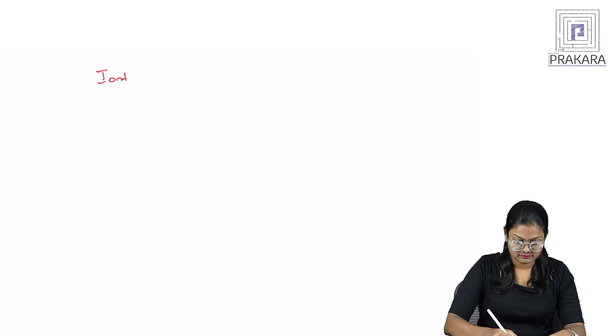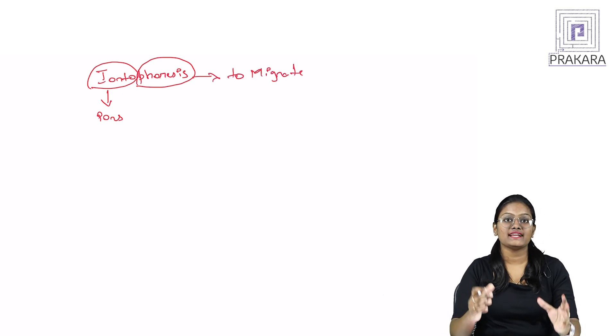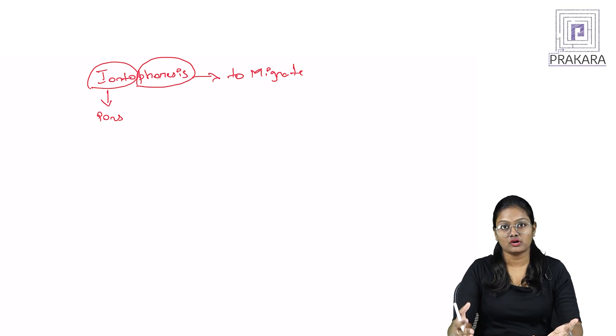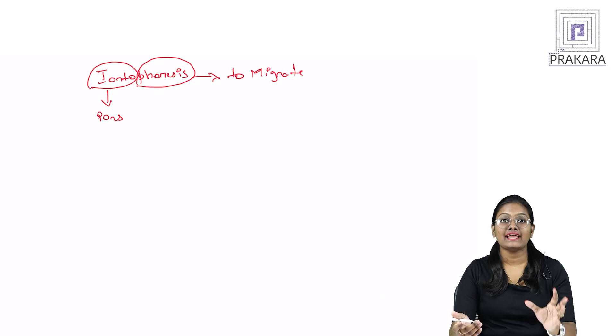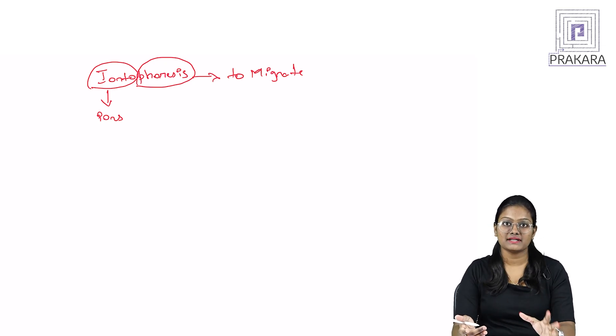This is Amrita and the topic we'll be talking about is iontophoresis. In the previous session we discussed phonophoresis. Iontophoresis and phonophoresis are similar procedures, but the way we implement them and the modes used for transfer of ions into the body are completely different. 'Ionto' means ions, and 'phoresis' means to migrate. In iontophoresis, we migrate chemically charged ions into the body through the skin. In phonophoresis we used ultrasonic waves, but in iontophoresis we use electrical current.